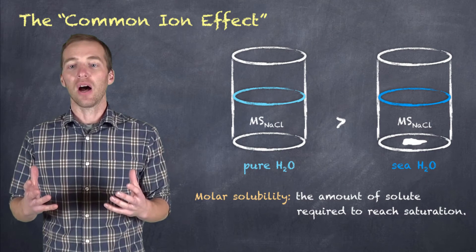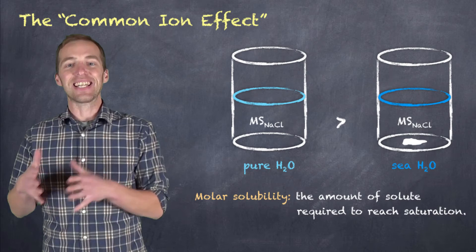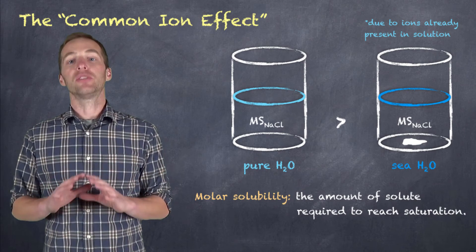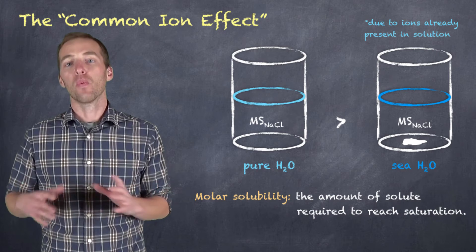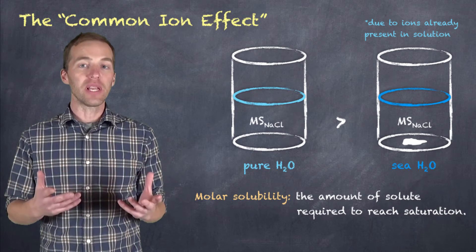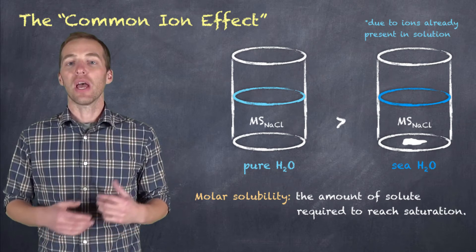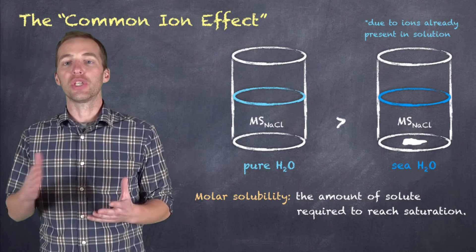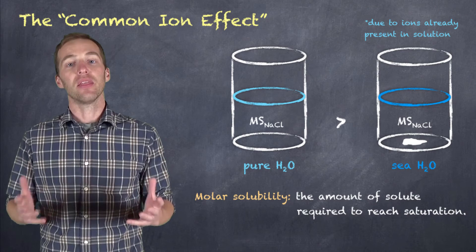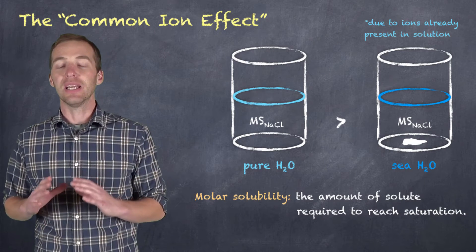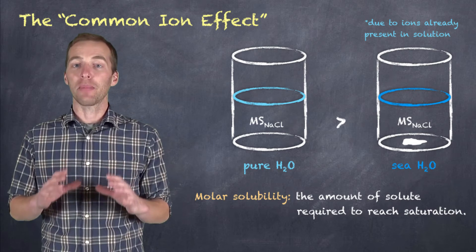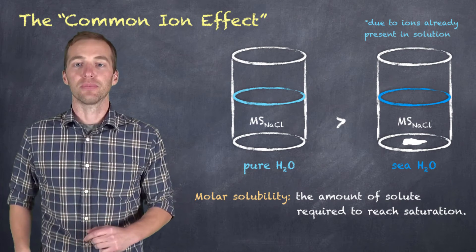Because the pure water does not contain any ions. Whereas the seawater already contains sodium ions and chloride ions. So it's going to take less salt in order to achieve that saturation point. Therefore, its molar solubility is less. And again, that's due to the presence of common ions already in that solution.